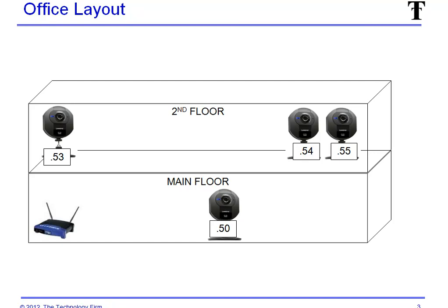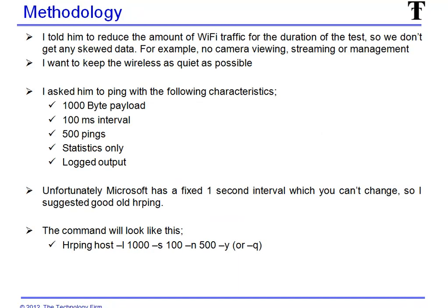Let's put the office layout out so we can see what it looks like. A real building isn't a box, but this is good enough for me. It's two floors, and I just wanted him to generically tell me where the cameras were in relationship to the access point. From there, I explained the methodology. I told him I wanted to reduce the amount of Wi-Fi traffic just for the duration of the test, just so we don't get any skewed data. Nobody's allowed to watch the cameras, there's no streaming, there's no managing the cameras during this test — just an ideal scenario. I want to try to keep the wireless as quiet as possible.